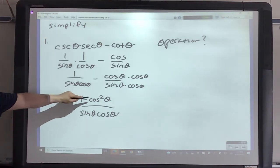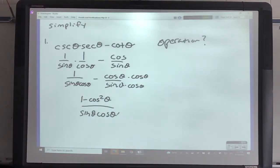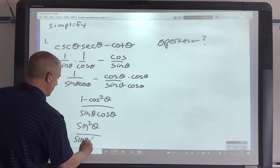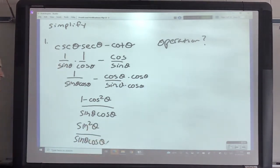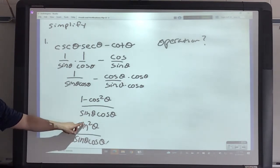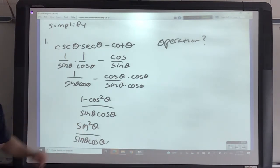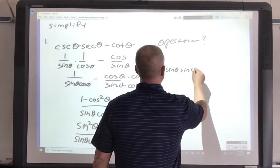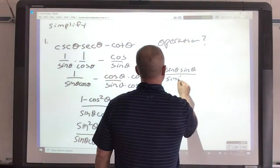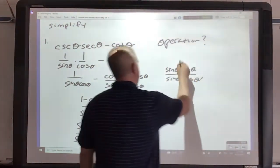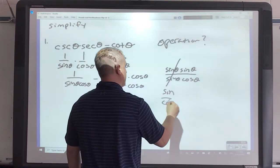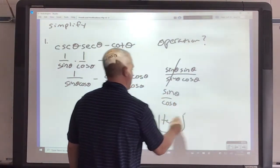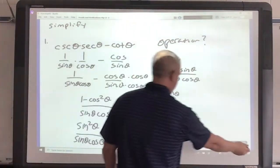If I go back to my trig identities, I have that 1 minus cosine squared available - that is going to be sine squared theta. Now, you can either know that crossing off one sine gives you 1 sine up there and 1 cosine there, or if you need to write it out: sine theta times sine theta over sine theta times cosine theta. Cross those off, and you're left with sine over cosine, which we know is tangent. These are going to take some practice, but you'll start to see some success with them.